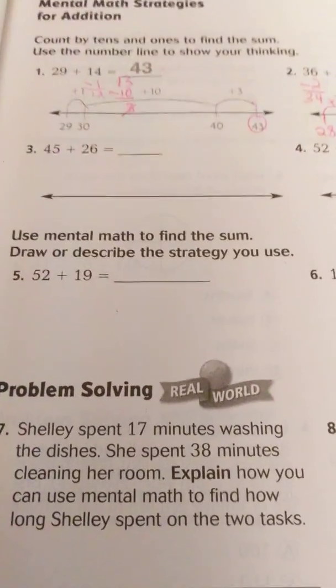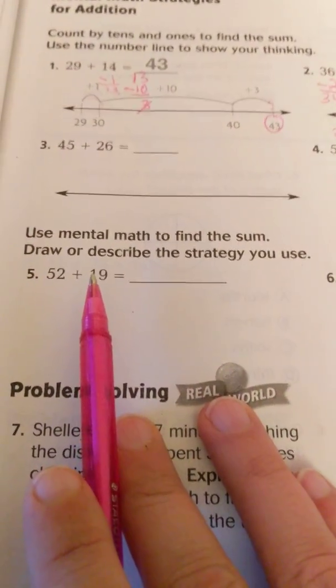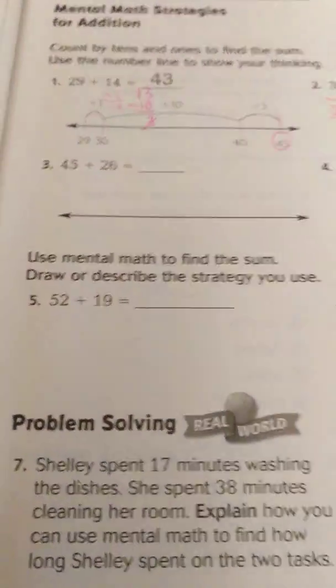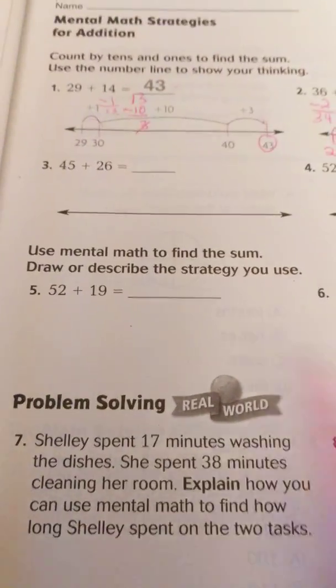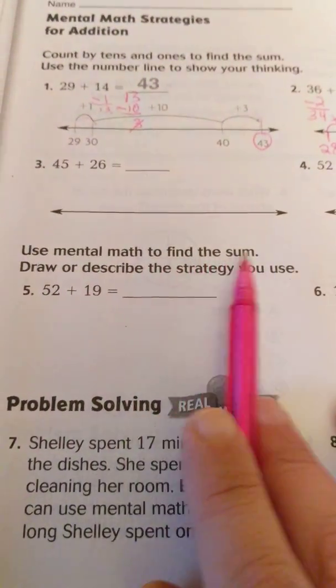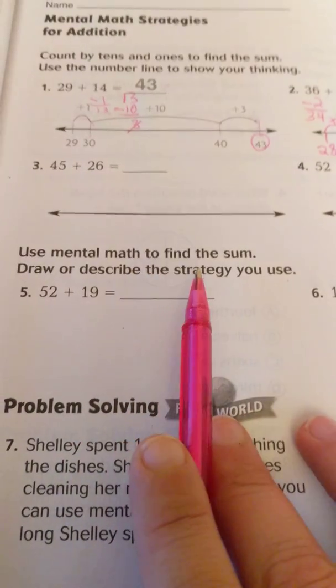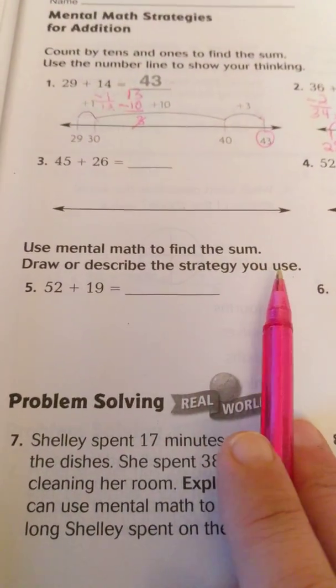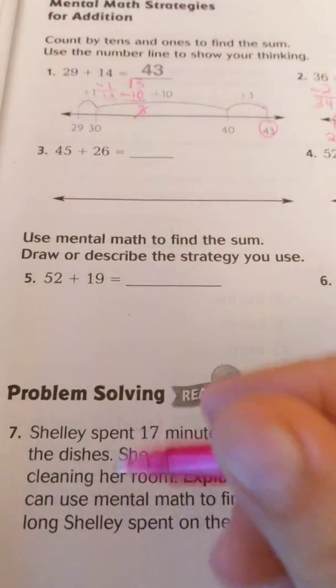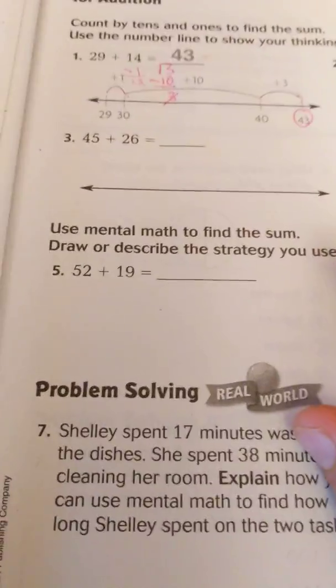When you come down here to these questions, they're asking you to do the same thing, they just don't have the number line drawn out. So the directions say, use mental math to find the sum, draw or describe the strategy you use. So you want to use mental math, but they also want you to show it out here.